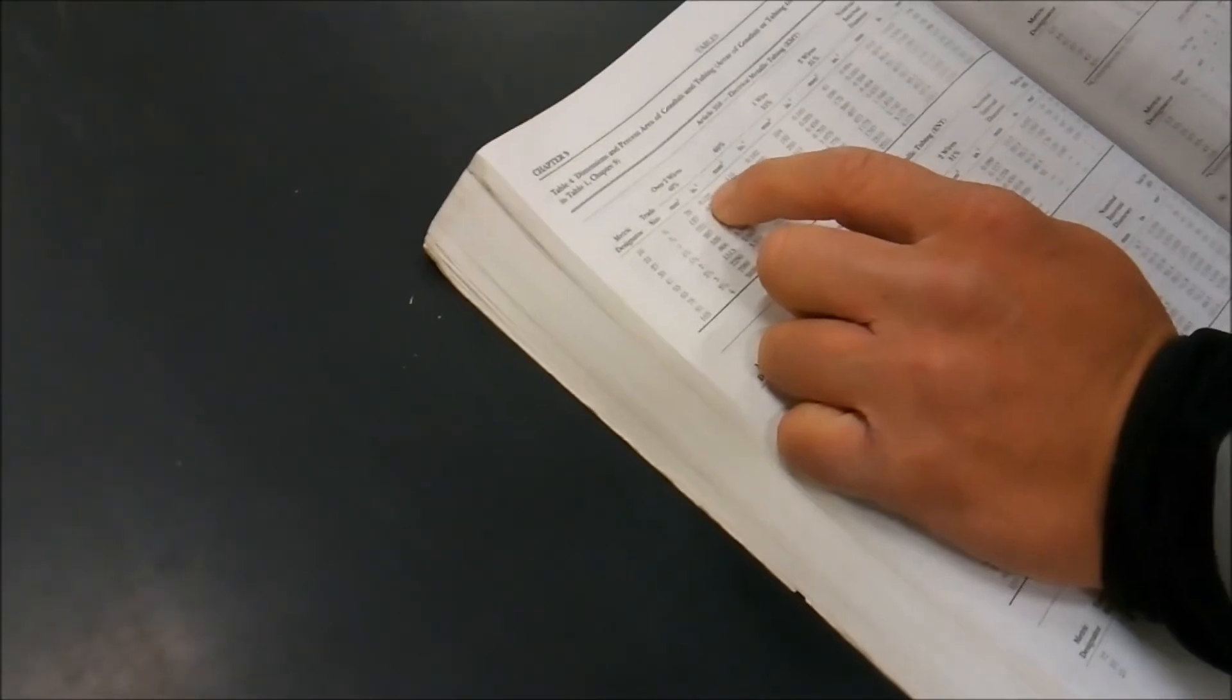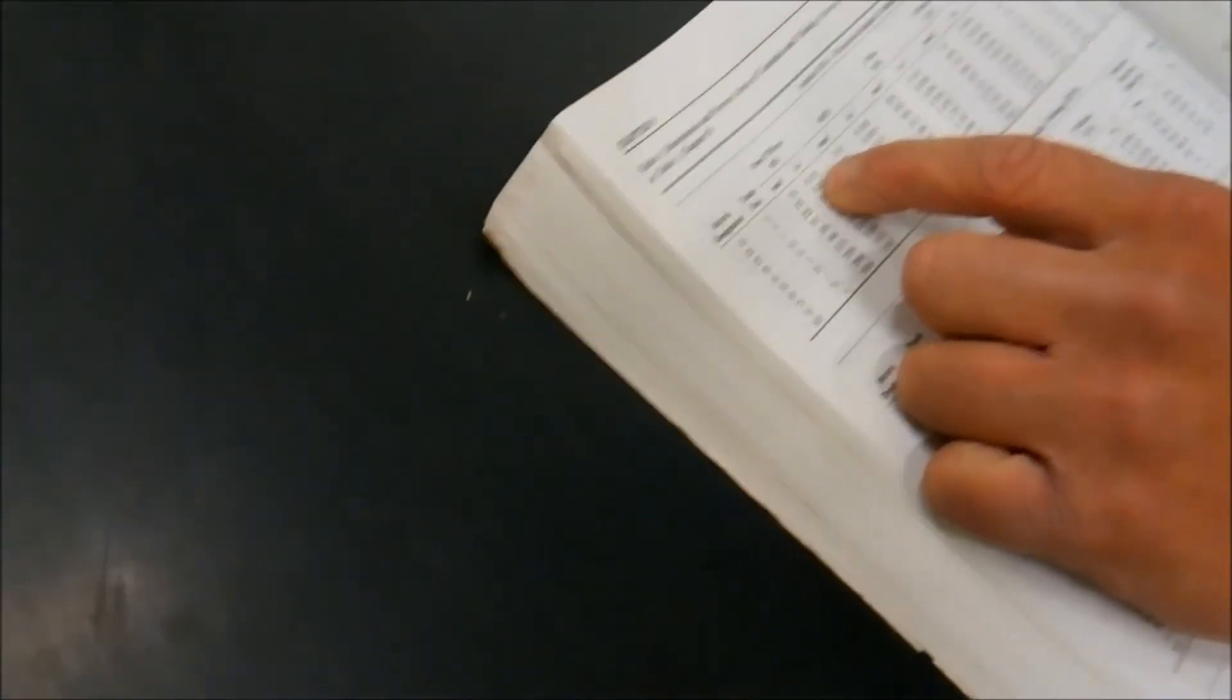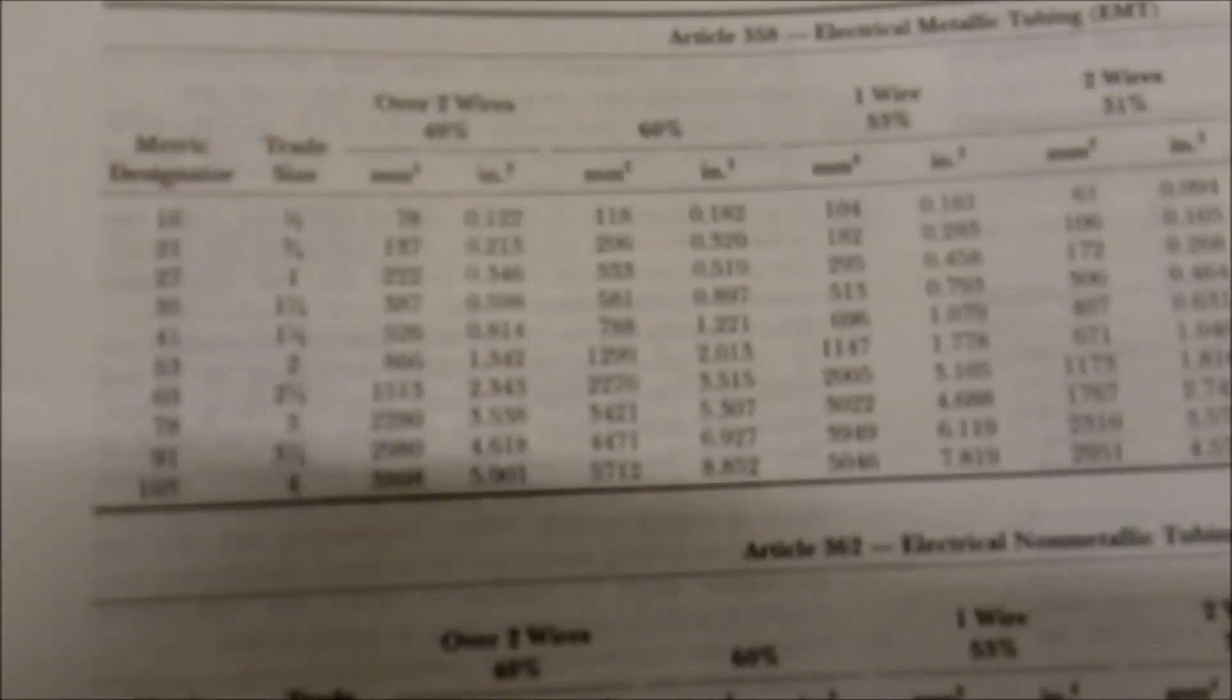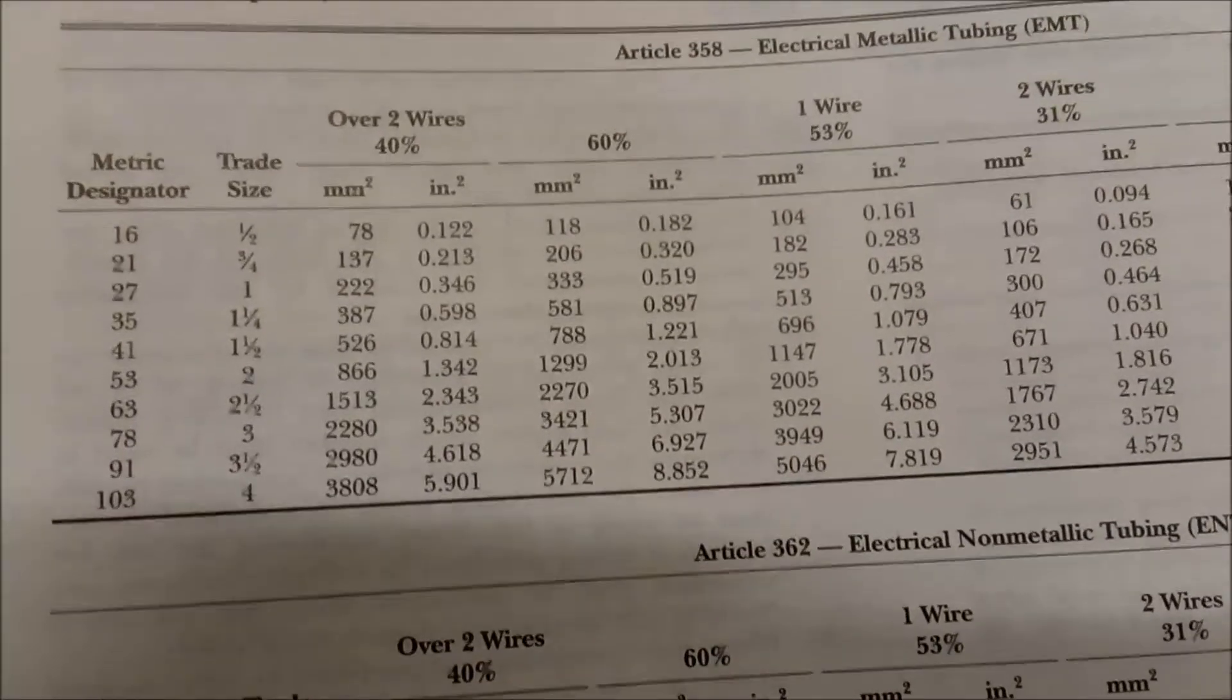So we go over here and say, okay, 40%. Okay, that's 0.122. It's a little bit less than 0.144, so we can't use the half inch. We've got to jump to 3 quarter inch. So now we know 3 quarter inch EMT is what we need.